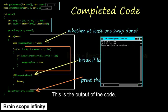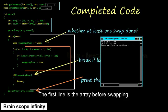This is the output of the code. The first line is the array before swapping. The last line is the array after it has been swapped.